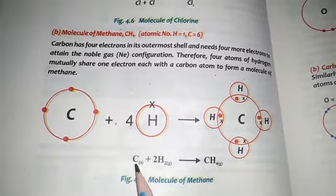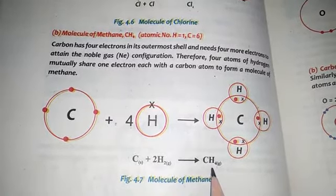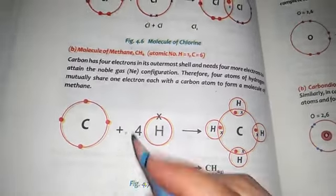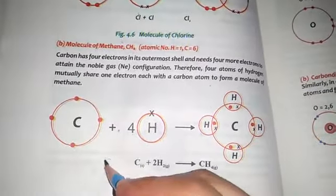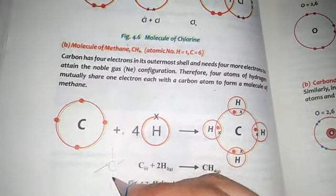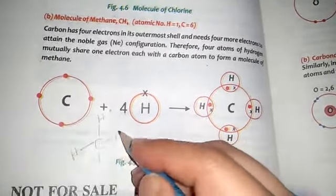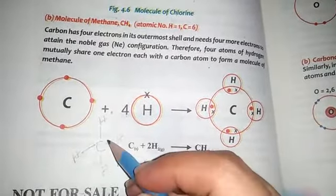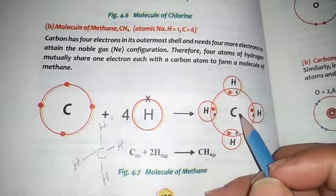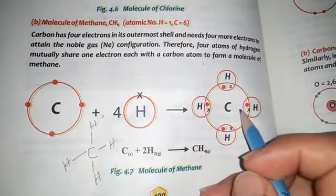When solid carbon combines with hydrogen gas, it forms methane gas, CH4. A single covalent bond is formed between each hydrogen and the carbon. If you see the diagram, there are four single covalent bonds — one, two, three, and four. There are four single covalent bonds present in the methane molecule, because carbon shares its electron with each hydrogen atom and each hydrogen shares its electron back with the carbon.